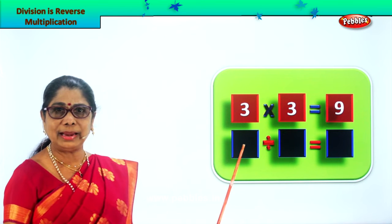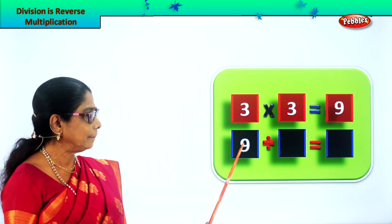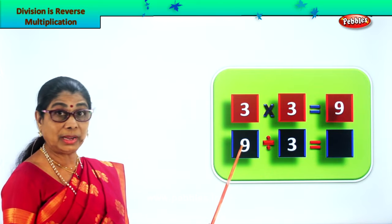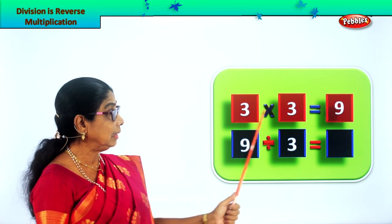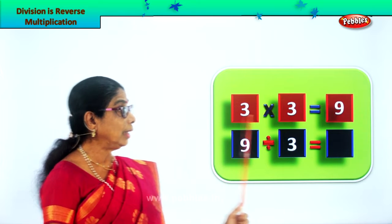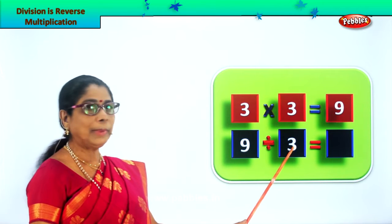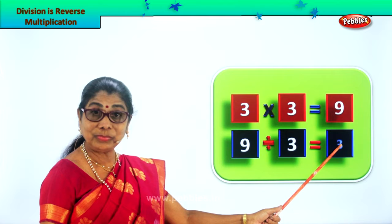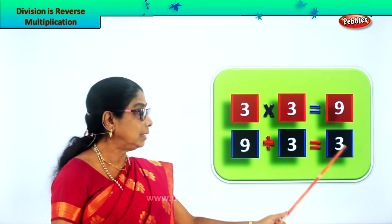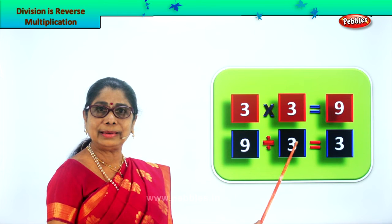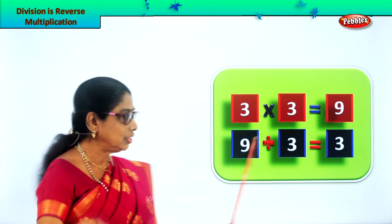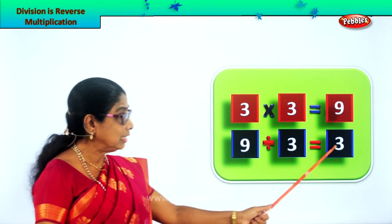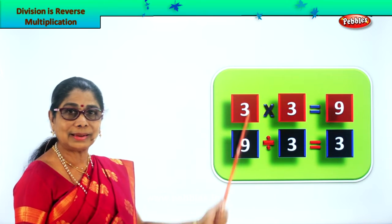Next we are going to do division. Divide nine — we will write nine here. We are going to divide nine by three. How many times will three go into nine? Three threes are nine. So when you look at this pattern, nine divided by three: three will go into nine three times — three, six, nine. So your answer is three. Now we have to check: three into three is nine. Three threes are nine. Division is reverse multiplication.